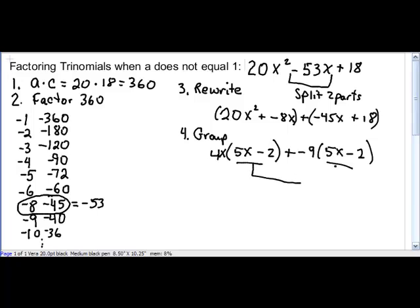So those are one of the factors in our answer. And the two GCFs are brought together to be the other factor, 4x - 9. So this is the factoring for the original function.